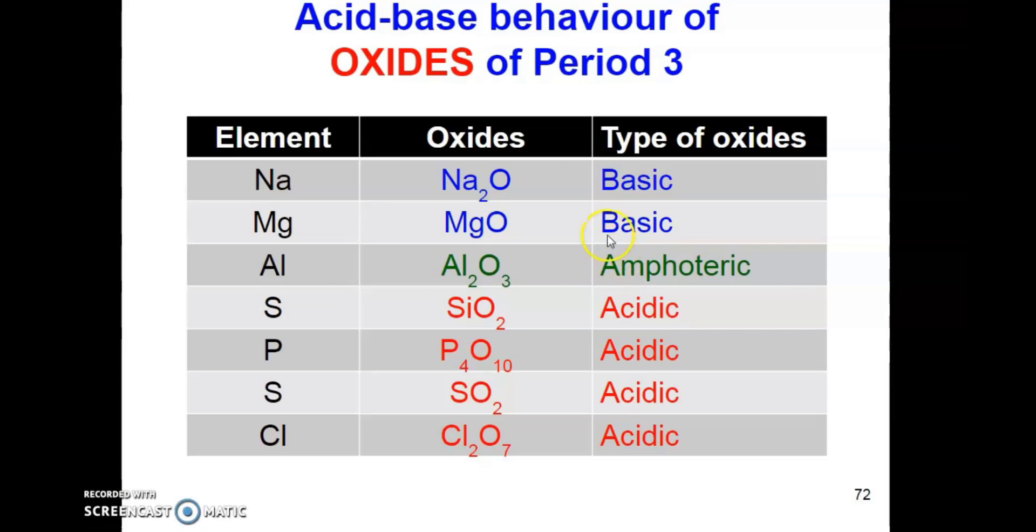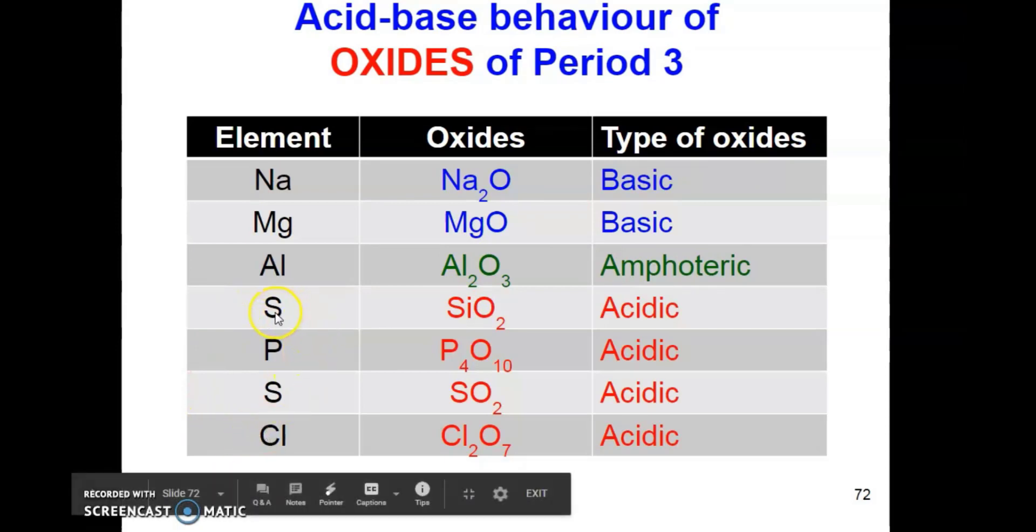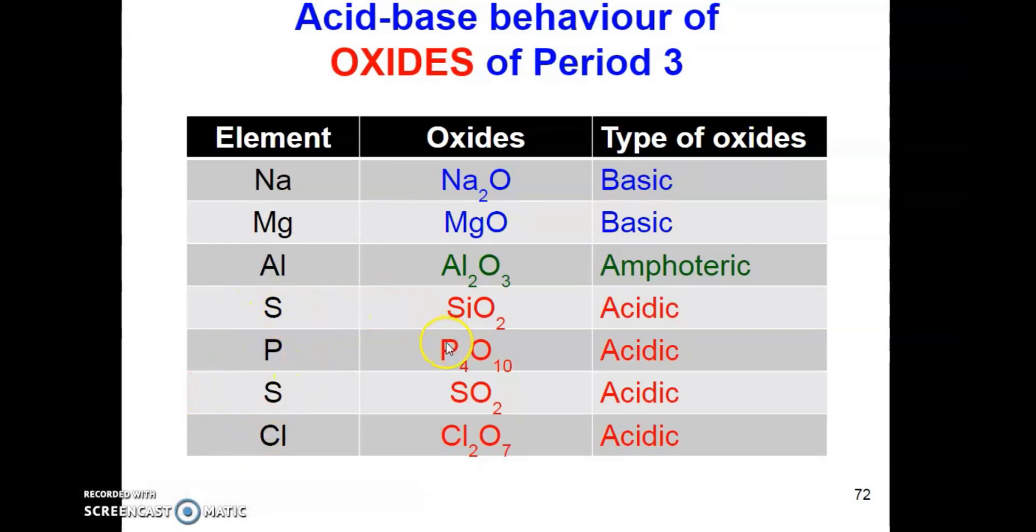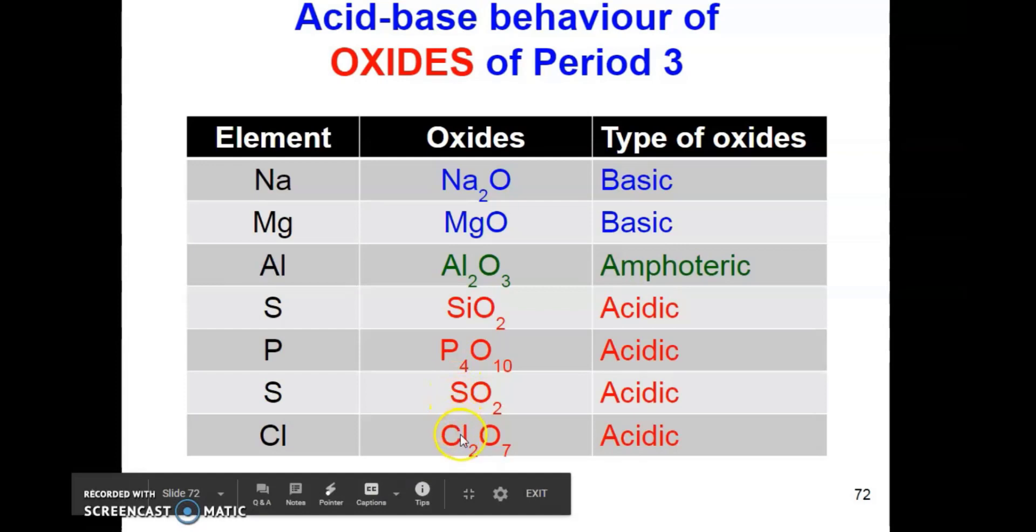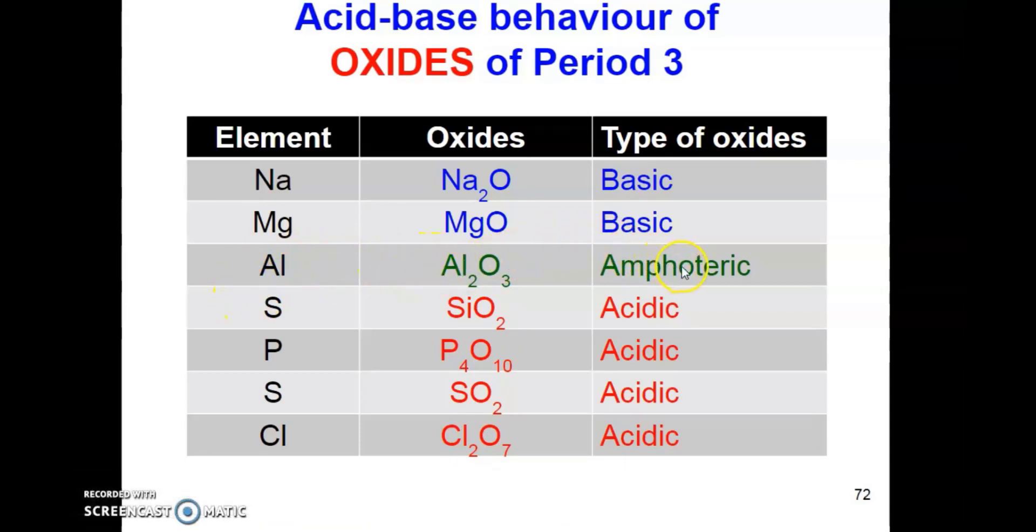In this final part of video, we are going to study the acid-base character of oxides of elements in period 3. For the oxides formed from the elements in period 3, it can be categorized in 3 types, which are basic oxides, amphoteric oxides, and acidic oxides.